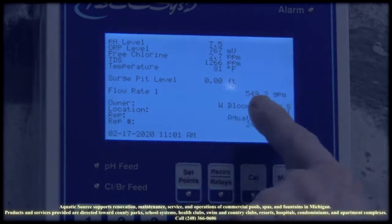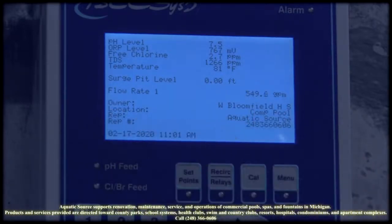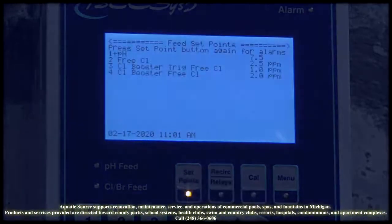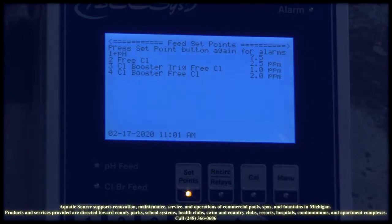On this one right here, we can control set points as to where we want to maintain the level. Here we're maintaining the pH at 7.5. We're maintaining chlorine free available at 2.5.